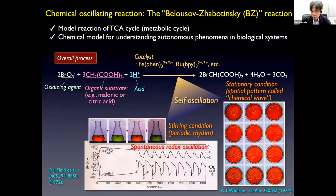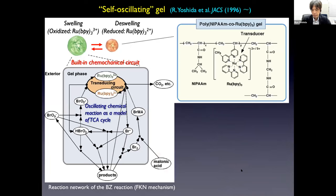In stationary conditions, a spatial pattern called a chemical wave is autonomously created. We fabricated gels in which the ruthenium bipyridine catalyst is chemically bonded to the cross-linked network of poly-N-isopropylacrylamide. Poly-N-isopropylacrylamide is very famous for being a thermosensitive polymer. If such gels are immersed in a solution of BZ substrates, except for the catalyst, the reactants penetrate into the polymer networks, and the BZ reaction occurs within the gel network.